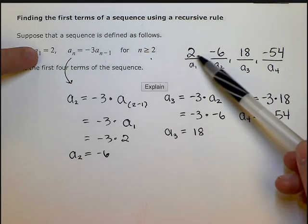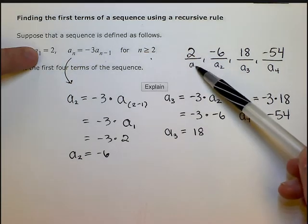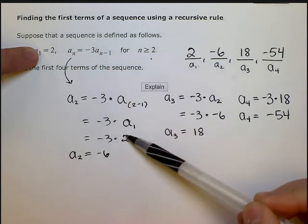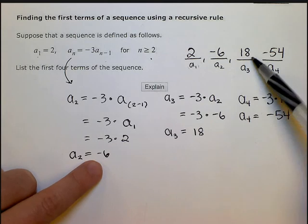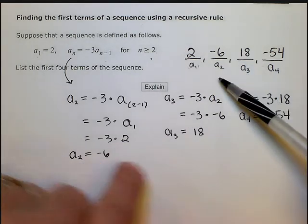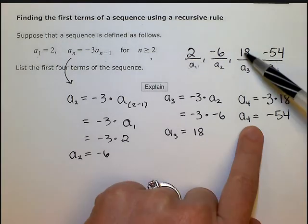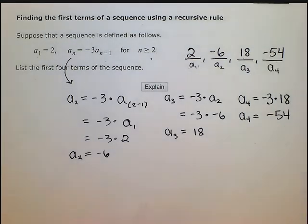So they give you the first one. Then you use this first one here to plug into the equation and get the second one. Then to find the third one, you plug in the second one into the equation to get the third one. To find the fourth one, you use the third one, plug it into the equation, and get the fourth one. That's it.